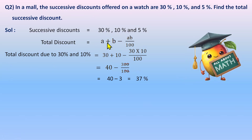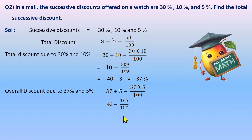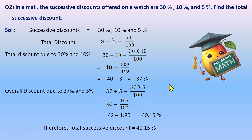Now we find the overall discount using 37 percent and 5 percent. Using the same formula a plus b minus ab by 100, with a as 37 and b as 5: 37 plus 5 minus 37 multiplied by 5 by 100. That gives 42 minus 185 by 100. Converting 185 by 100 to a decimal gives 1.85. So 42 minus 1.85 equals 40.15 percent. The total successive discount is 40.15 percent.